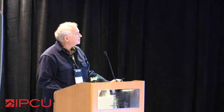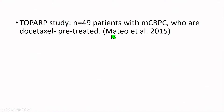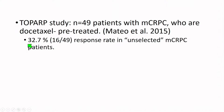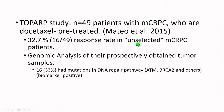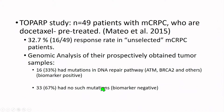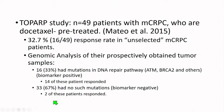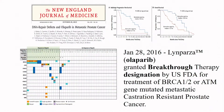The TOPARP study enrolled 49 patients with metastatic prostate cancer who had been treated with at least one second-generation hormone blocker and were also docetaxel pre-treated. They treated all patients unselected, but then looked retrospectively at what DNA repair mutations the tumors had. Genomic analysis of prospectively obtained tumor samples revealed 16 patients had mutations in the DNA repair pathway and 33 did not. Fourteen of the 16 patients with repair pathway mutations responded, versus only two of 33 without such mutations. This is personalized therapy at its best, and that's why it has generated so much excitement.